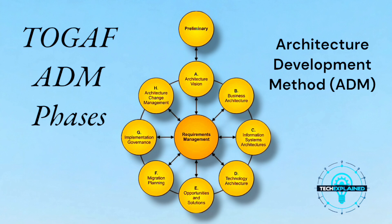Then we dive into Information Systems Architectures, Phase C. Think of this as designing the brain and nervous system of your house — how all the smart devices, security systems, and internet connections work together. For businesses, it's about defining the data architecture — where information is stored and how it flows — and application architecture, meaning what software and systems you'll use.